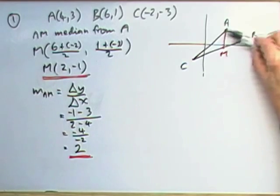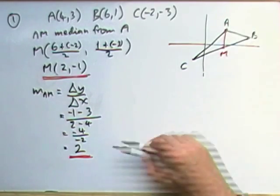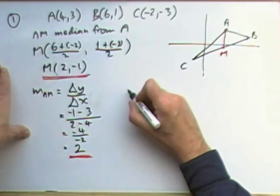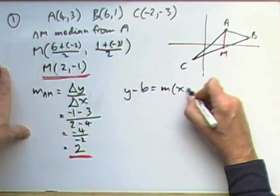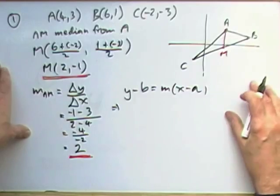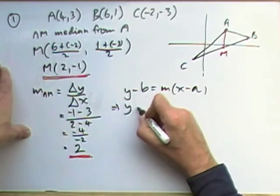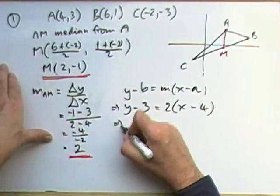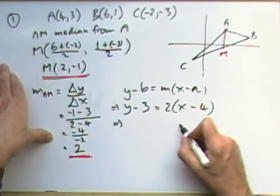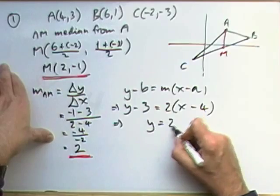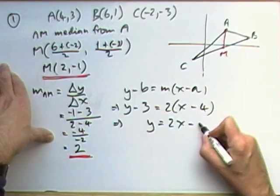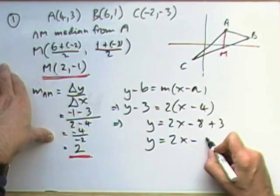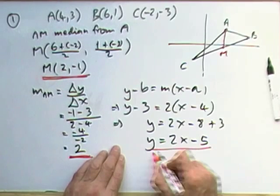Lastly, the equation. Y minus B equals MX minus A. Putting in point A: Y minus 3 equals 2 times X minus 4. There'll be no fractions in this and X will be positive, so I'll put it in the form Y equals 2X. That would be minus 8 plus 3, so Y equals 2X minus 5 for the final answer. That was the first one done.